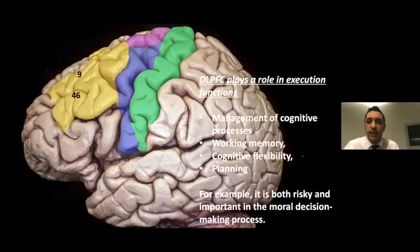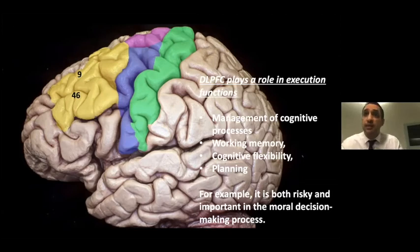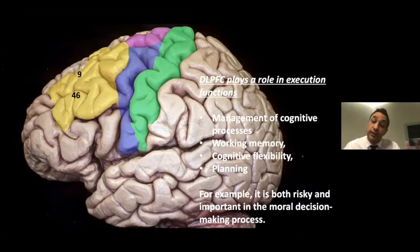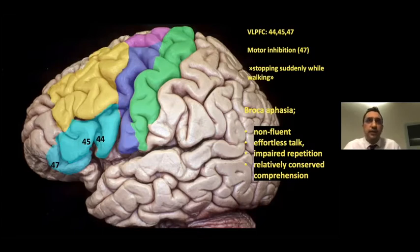The dorsolateral prefrontal cortex is not an anatomical but a functional definition. It is located in the middle frontal gyrus of humans, and it corresponds to Brodmann areas 9, 46, and 47. The ventrolateral prefrontal cortex is located in Brodmann area 47, just in front of the pars triangularis and below the inferior frontal sulcus.